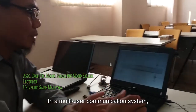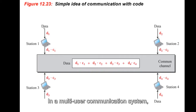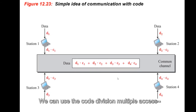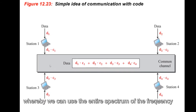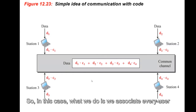In a multi-user communication system, whereby we have a few users trying to transmit their data simultaneously, we can use Code Division Multiple Access (CDMA), whereby we can use the entire spectrum of the frequency and also the entire time domain.